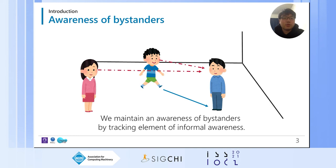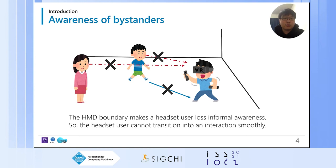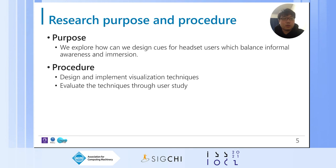Informal awareness enables us to know who is around and available for interaction. By tracking such information, we maintain an awareness of the presence of others, and we can loosely understand what others' intentions in the space are. To solve this HMD boundary issue, we need to provide such information to the headset user and enable them to maintain informal awareness. In this research, we explore how to design informal awareness cues that balance immersion — the idea is that VR headset users can see these cues and be aware of those around them without being too distracted from their VR experience.